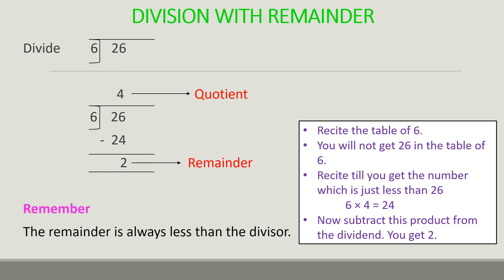Now again we have to divide but it is not possible. So 2 is our remainder and 4 is our quotient. Always remember that the remainder is always less than the divisor.